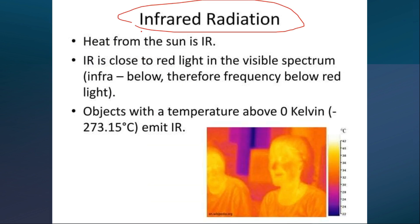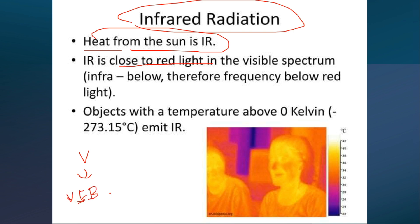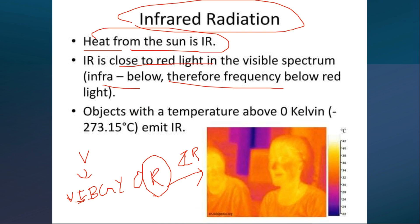Infrared radiation is known as heat from the sun. It is close to red light in the visible spectrum — its frequency is just below red. Objects having a temperature above zero Kelvin emit infrared radiation.